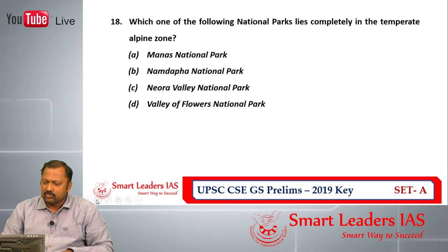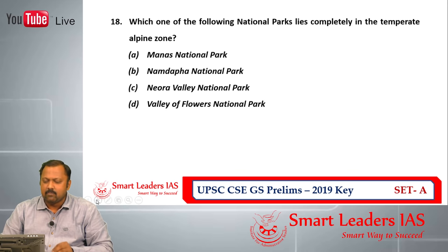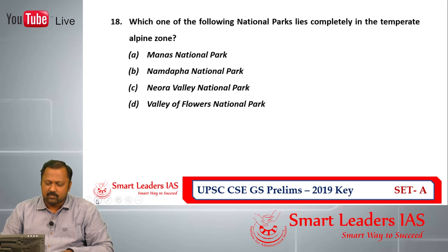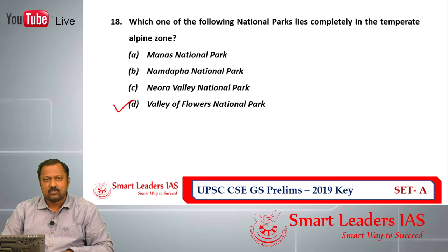Next question: which of the following national parks lie completely in the temperate alpine zone? All the national parks given are located in the temperate region. When we consider 'alpine,' we calculate based on altitude. Among the given national parks, Valley of Flowers National Park is located at the highest altitude. So question number 18, answer is D.